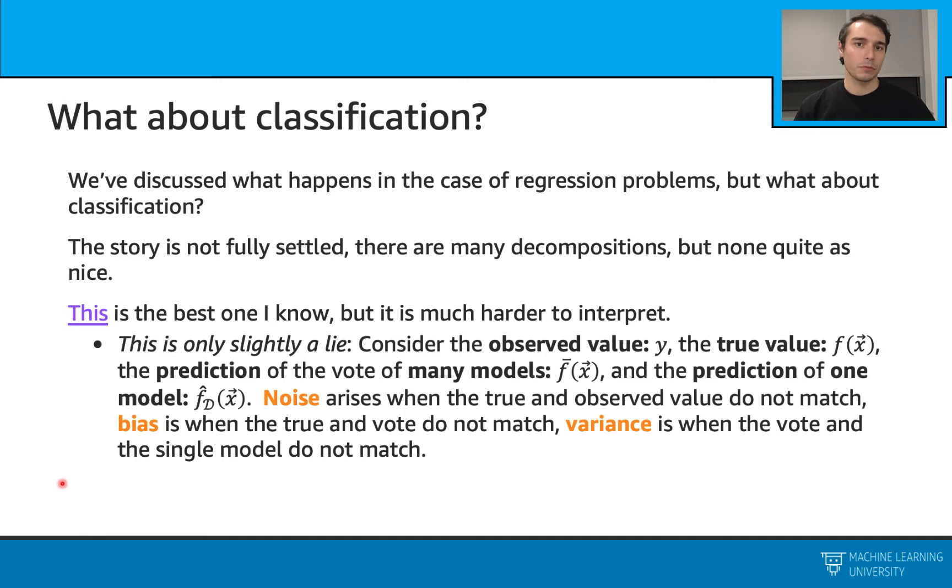For example, for regression we can just take the average of models for our purposes, but for classification we need to refer to voting, and this makes things a bit more complicated. Here's a nice paper for that, if you're interested you can check this out.